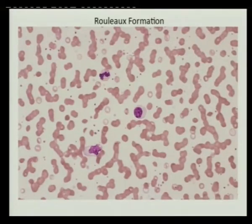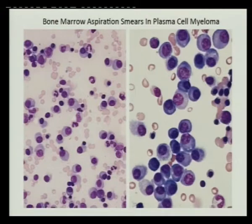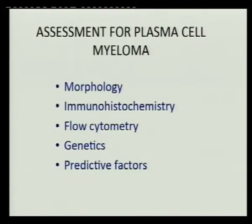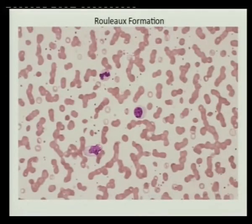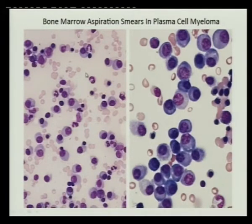Clinically in a typical myeloma case you will see rouleau formation. You might have some plasma cells circulating in peripheral blood — but that doesn't mean it's plasma cell leukemia; you need 20% or more, or an absolute count of 2,000 plasma cells in the peripheral blood.